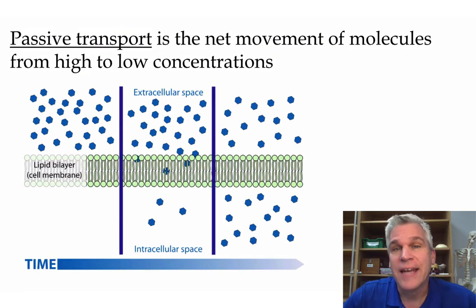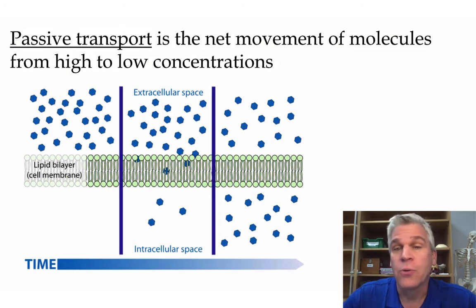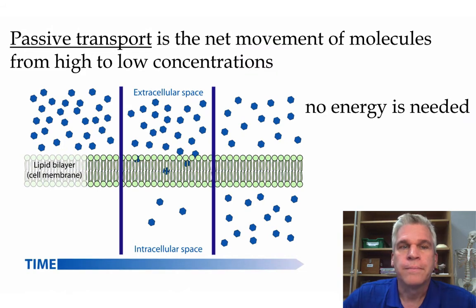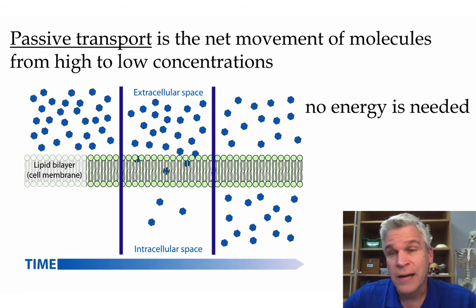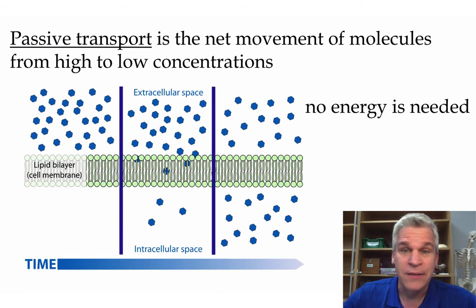One way that things can get in and out of the cell is through passive transport. This is the net movement of molecules from high to low concentrations. This is the natural tendency of all molecules — there will be more collisions on the higher concentration side than on the lower concentration side, which pushes molecules from the higher area to the lower area. Because this is just the natural tendency of things, no energy is needed for this movement.